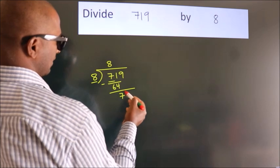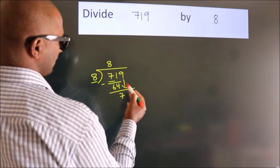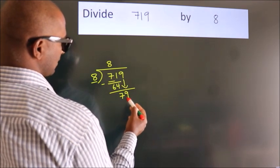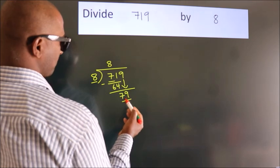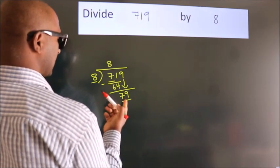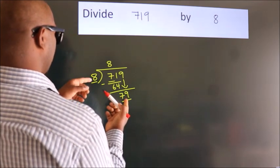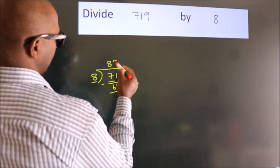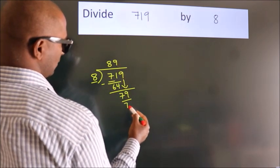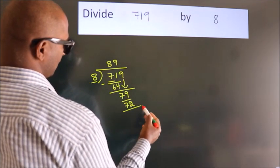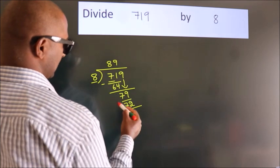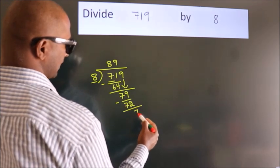After this, bring down the beside number. So 9 down, giving us 79. A number close to 79 in the 8 table is 8 times 9, 72. Now we subtract. We get 7.